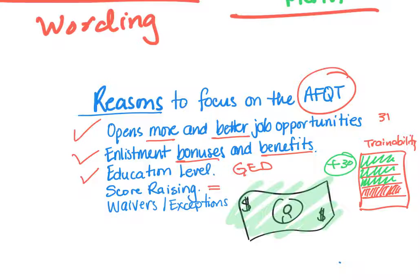On score raising: recruitment centers have quotas — a certain number of people they're required to enlist in a given period. When they have a lot of applicants, they'll raise the minimum score required to go to MEPS and take your entry exam, so they can select from the better pool of candidates. I live in San Antonio, Texas — Military City — and I've seen this happen a lot because there's a strong inclination here for joining the military.